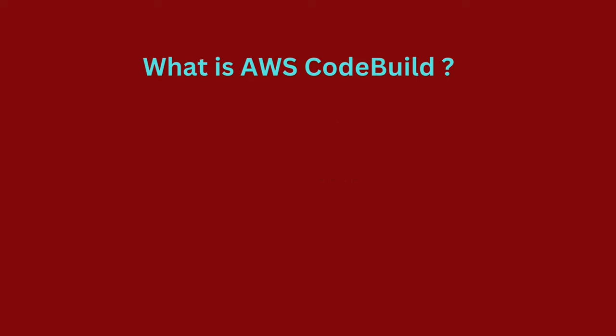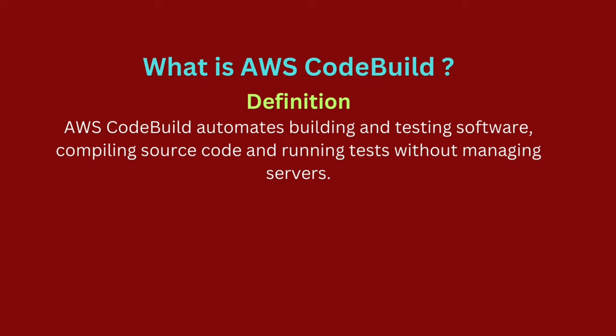AWS CodeBuild is a managed service on AWS that automates the building and testing of software applications. It collects the source code, runs the tests, and prepares deployable packages without requiring management of build services. CodeBuild is known for its fast startup times and ability to scale based on workload demands.